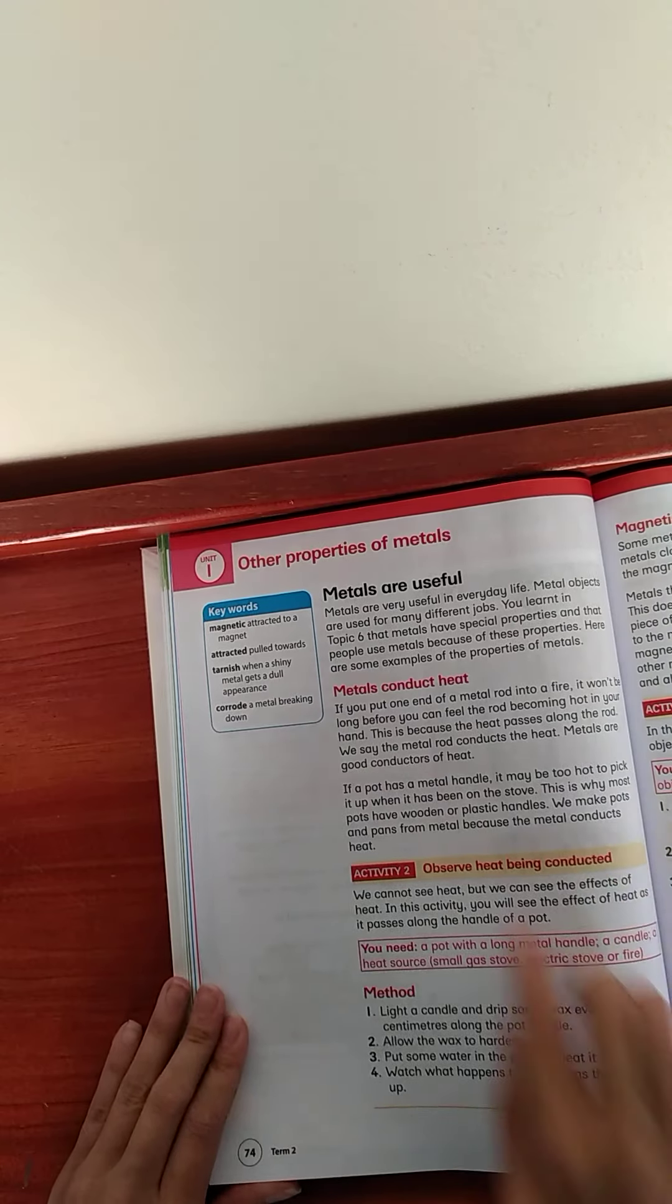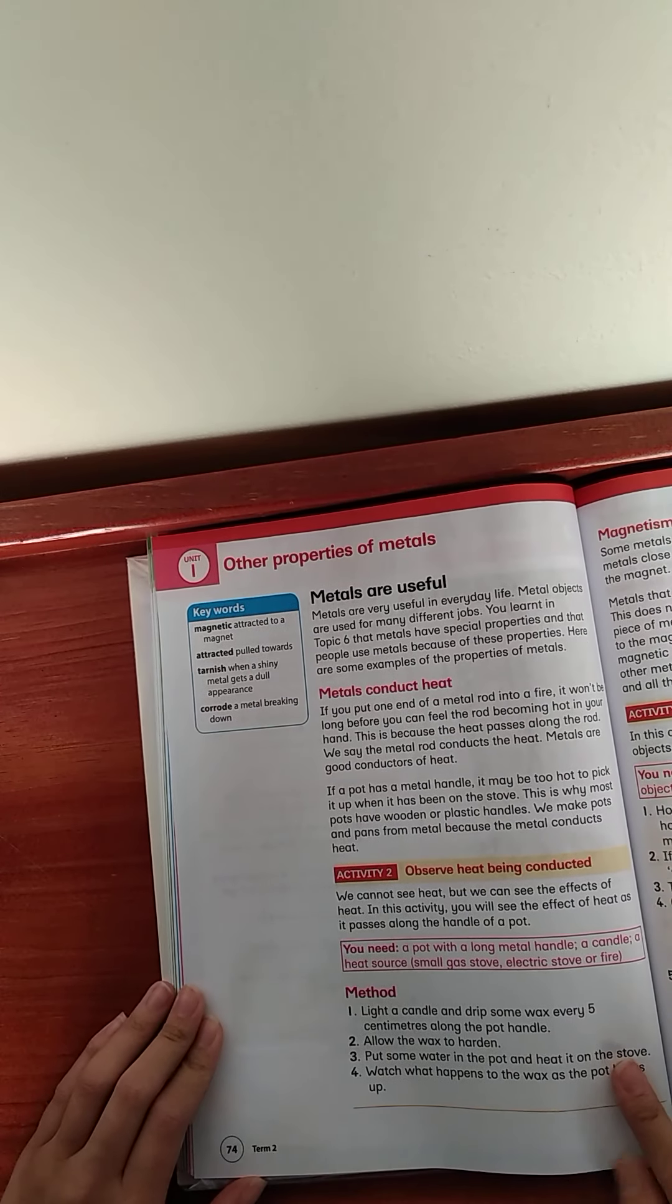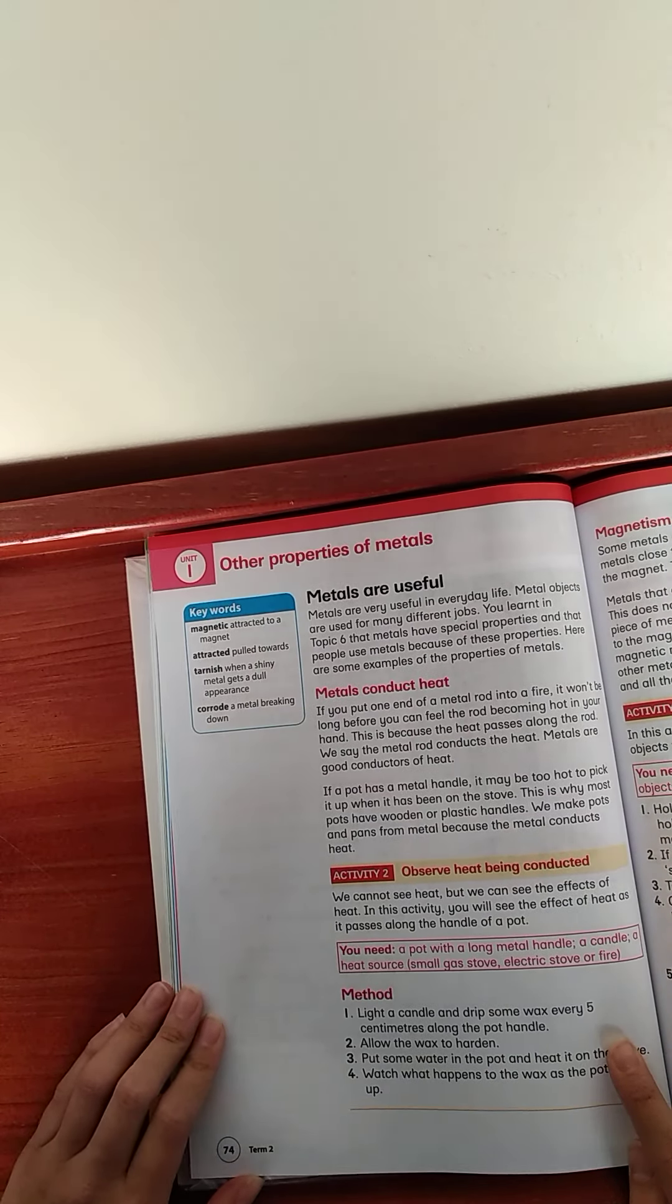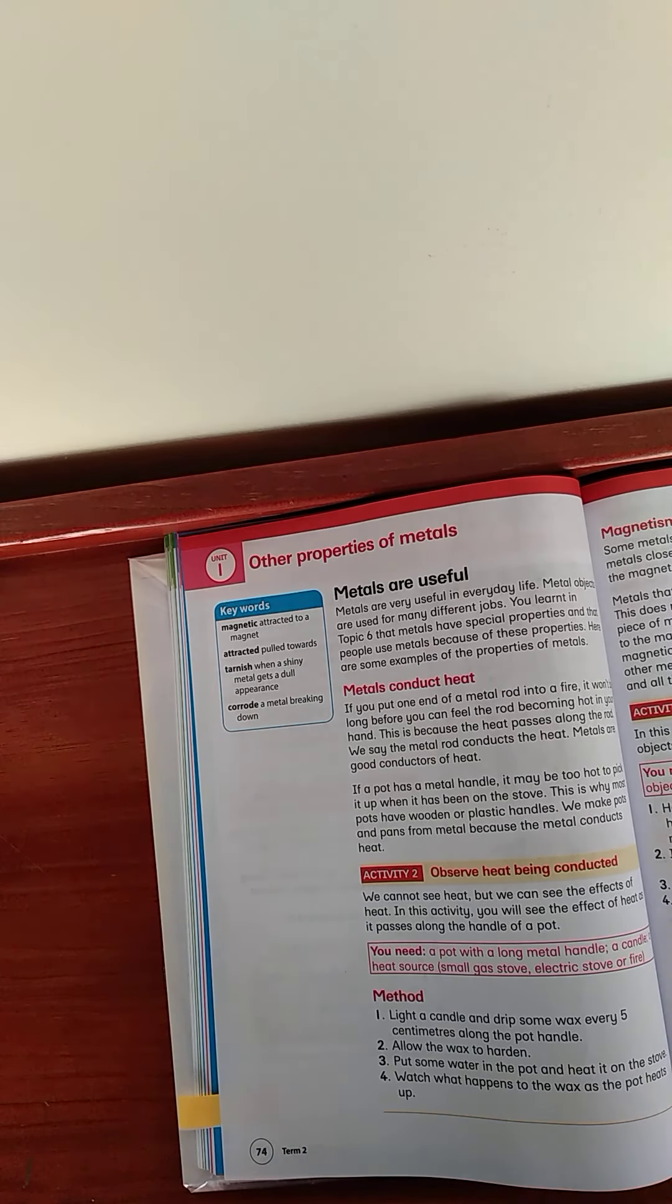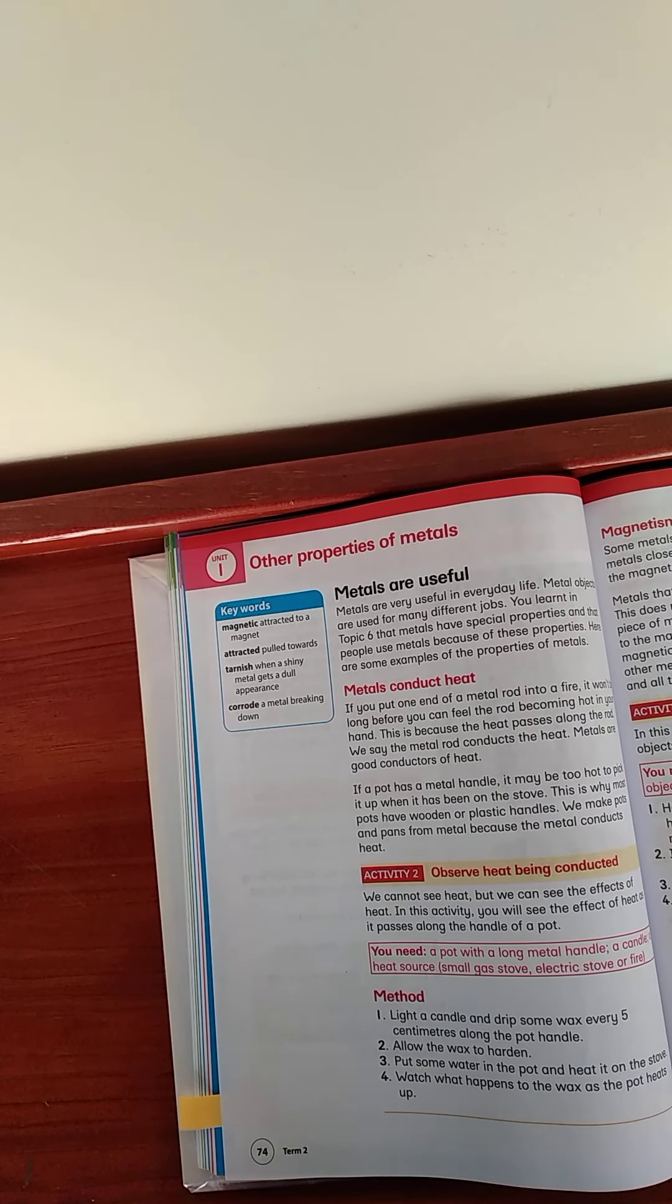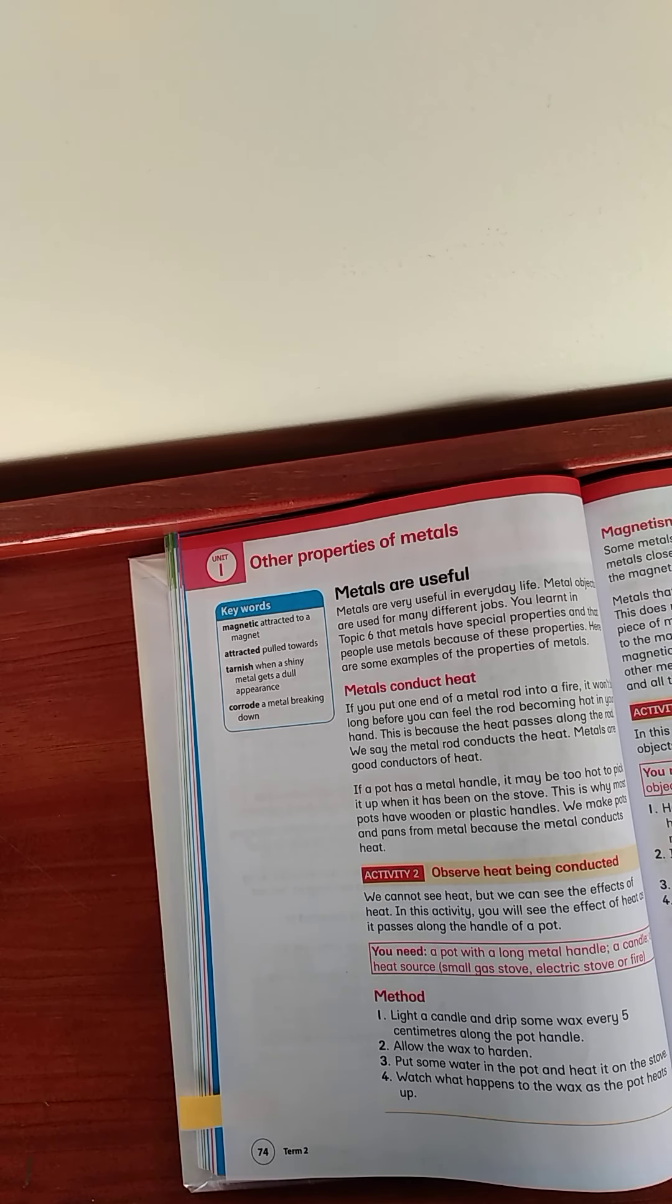Let's go to the next page. Other properties of metals. Now, let's go to read our keywords. Magnetic. Attracted means pull towards. Tarnish means when a shiny metal gets a dull appearance. Corroded is when a metal breaks down.